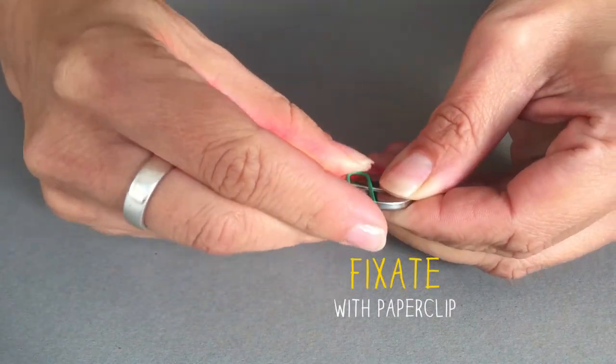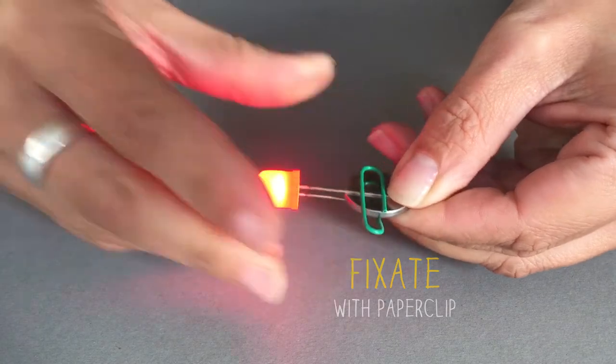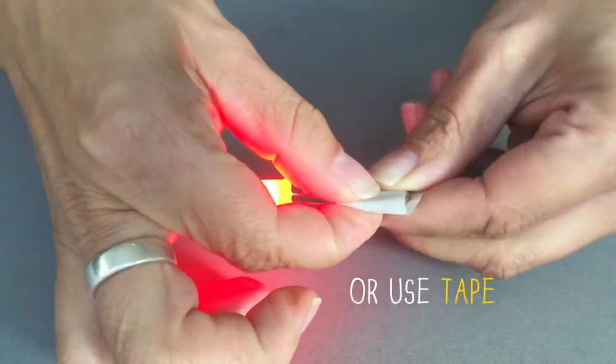Use a plastic coated paper clip to fixate the LED light to the battery, or use a piece of tape.